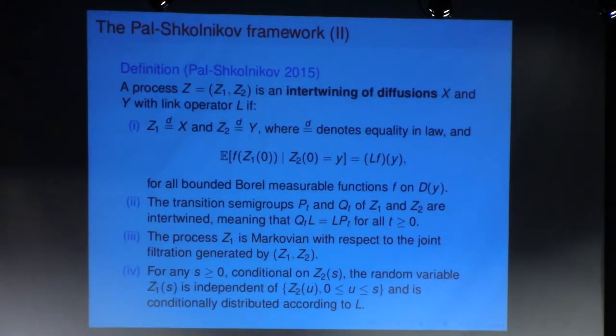Okay, so what they define is that a process Z is an intertwining of the diffusions X and Y, essentially if it has the properties that we want.